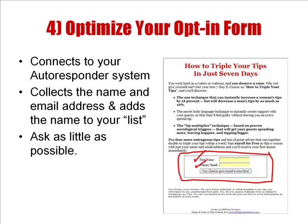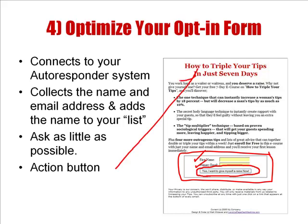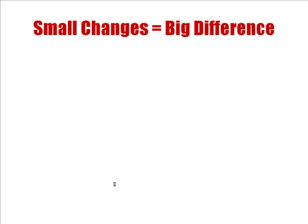Here's a second tip to make the form better for you: include an action button. On most forms by default, they add a submit button and the text just says 'submit.' What I want you to do is put some text in there that relates to the same benefit you're talking about — the same benefit you talked about in your headline and throughout the whole page.